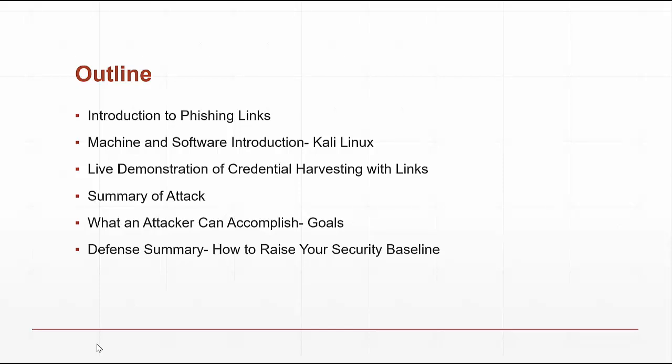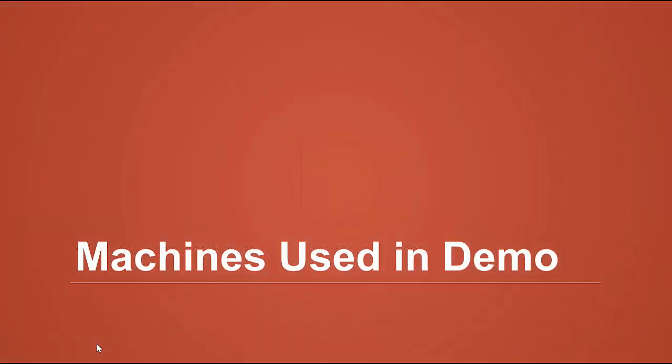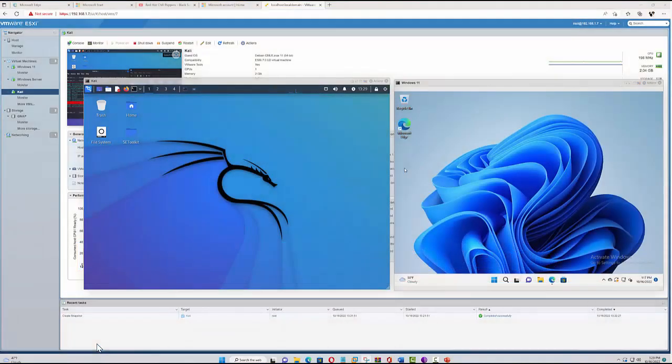Let's take a look at the two machines we're going to use in this demo. On the left is Kali Linux with the Dragon logo, and on the right is a Windows 11 machine. Both of these machines are brand new from Microsoft with Microsoft Defender endpoint detection and response on them, which makes it even more interesting to showcase what you can actually do with two brand new protected machines.